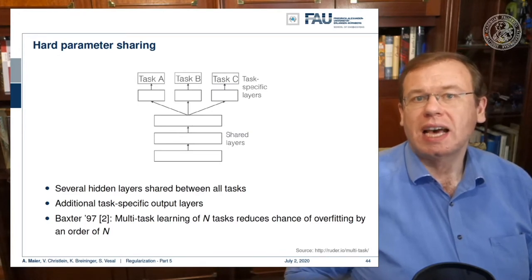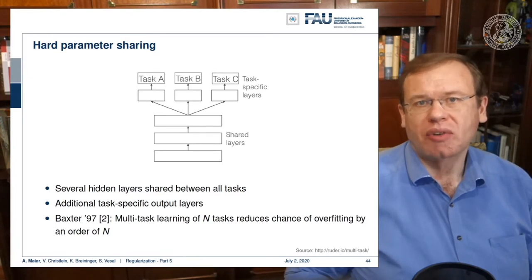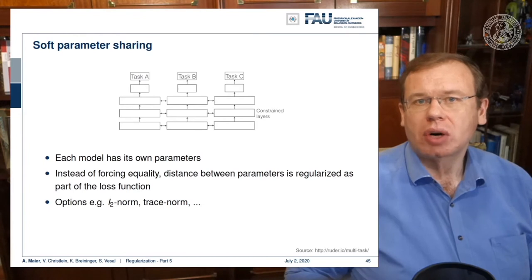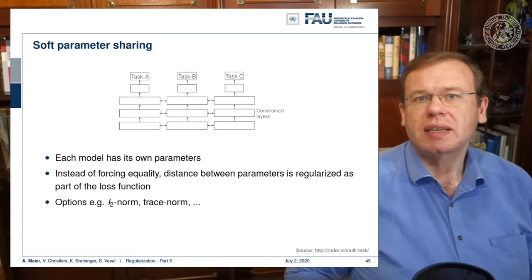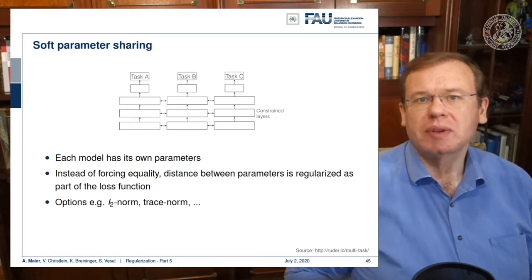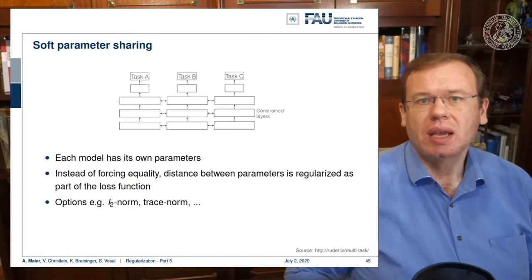Several hidden layers are shared between all tasks. As already shown by Baxter in reference 2, multi-task learning of N tasks reduces the chance of overfitting by an order of N. Instead of hard sharing, you can also do soft parameter sharing, which introduces an additional loss. You constrain the activations in the respective layers to be similar — each model has its own parameters but they are linked to perform similar yet different extraction steps.